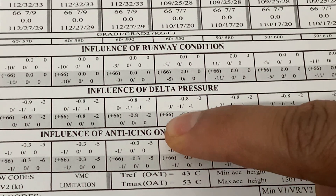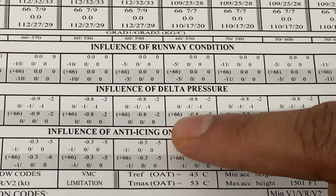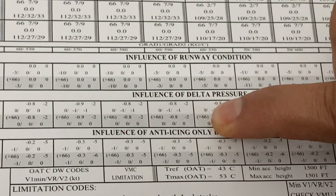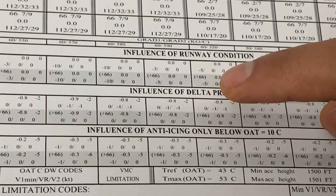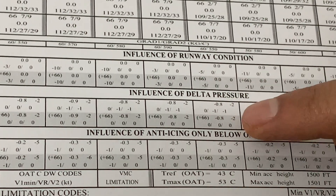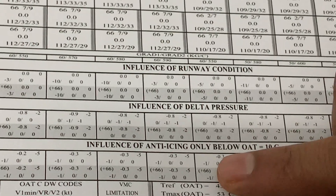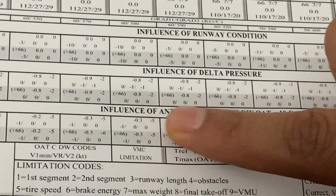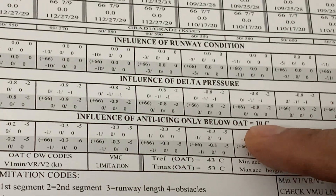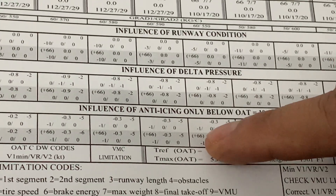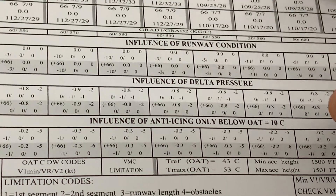Within each correction box there are upper and lower parts. In some charts the lower part is shown as a shaded area. The shaded area contains a temperature value called TVMC — a fictitious temperature. If the actual temperature is greater than this value, your V-speeds are near the VMCG and VMCA limitations, and corrections must be applied accordingly. Another influential parameter is engine anti-ice: if conditions are below 10°C, these corrections apply.